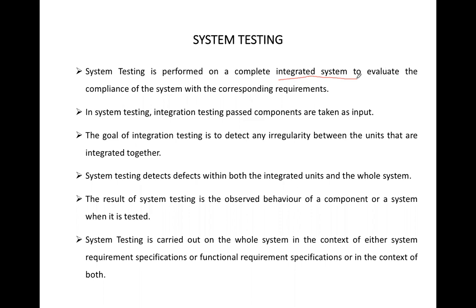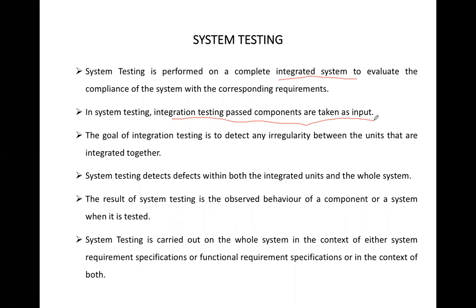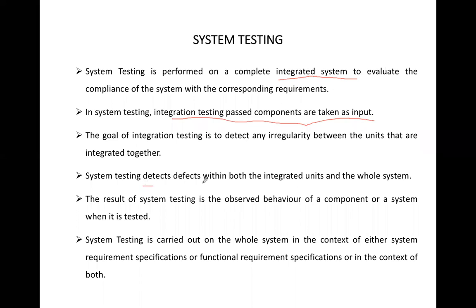In system testing, integration testing passed components are taken as input. As we discussed before, system testing happens after integration testing. So integration testing must be successfully executed first — its output is used as input to system testing. The goal of integration testing is to detect irregularities between integrated units, but system testing is used to detect defects within both the integrated units and the whole system.